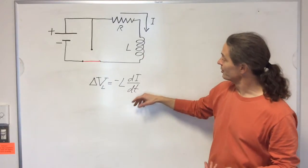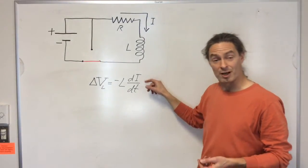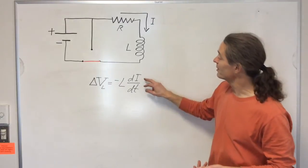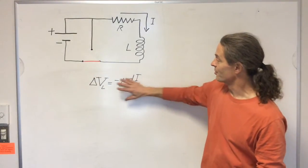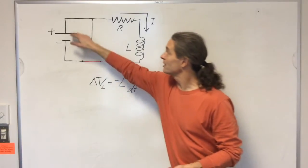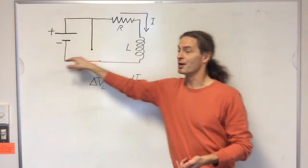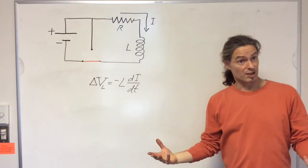But over time the current will build up, and as the current builds up closer to its maximum value, the rate of change of the current will decrease and so this will drop to zero and eventually you'll have a steady current built up. And so that's where we're going to begin our analysis.